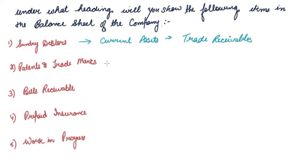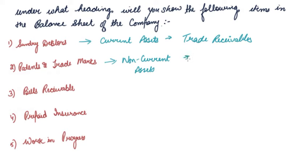Then comes patent and trademark. Patents and trademarks are basically intangible assets, so they come under non-current assets because these are a kind of fixed asset, and under the category intangible assets.